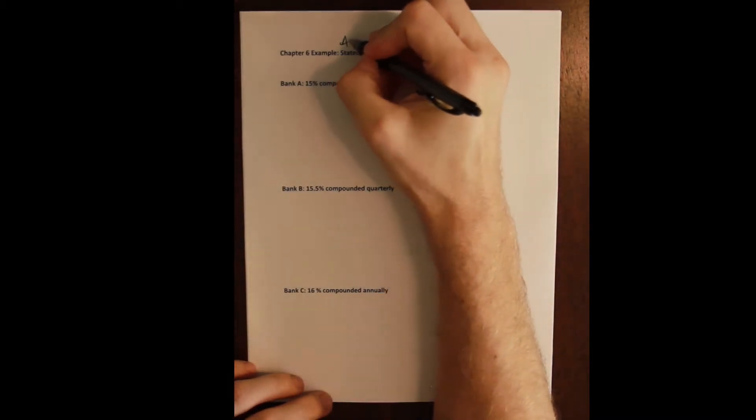In this problem we're going to look at how to understand the difference between the stated rate, which is the APR—the annual percentage rate stated in the contract—versus the effective annual rate. Like we talked about in the lecture, we want to be able to compare a number of different rates with different compounding periods and still have a comparison across them.